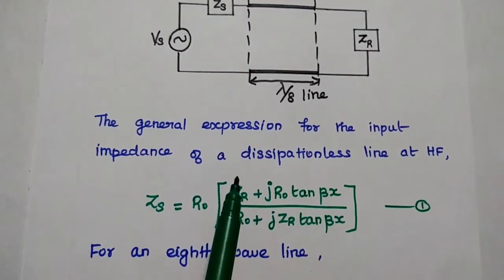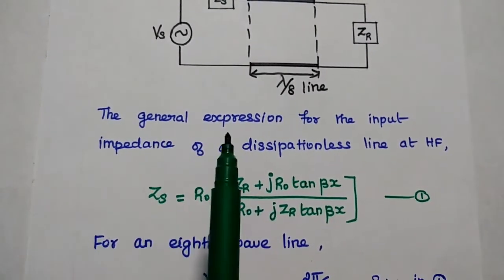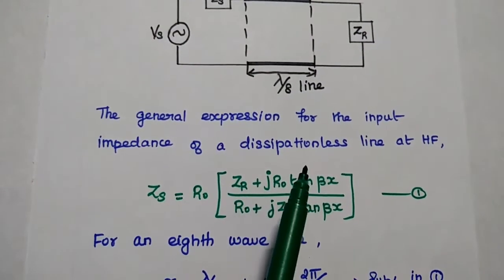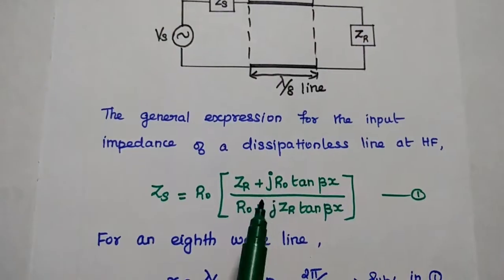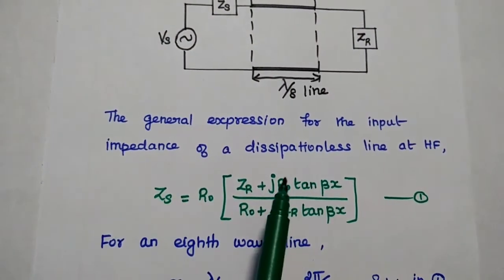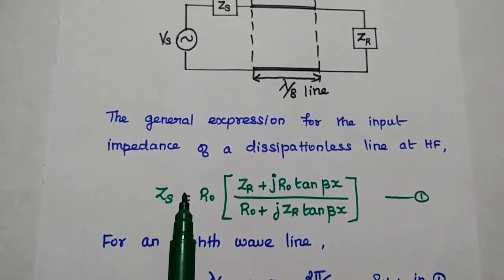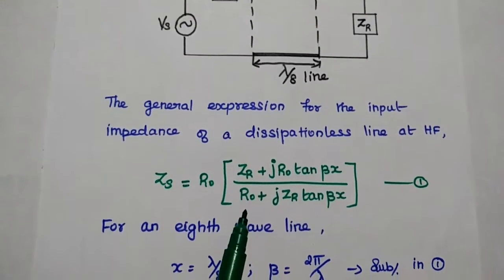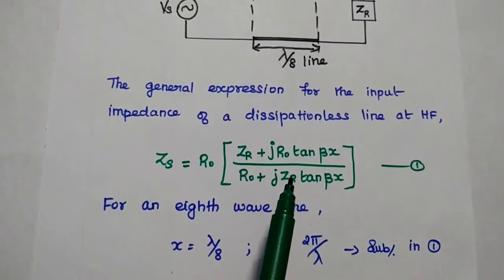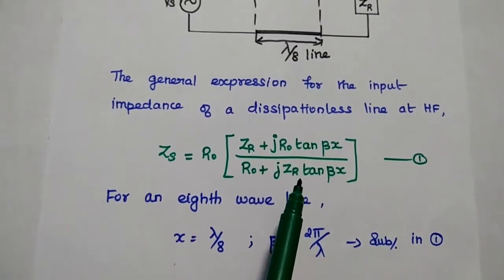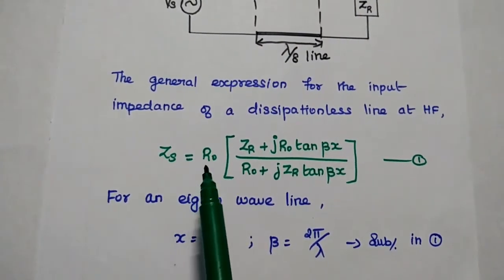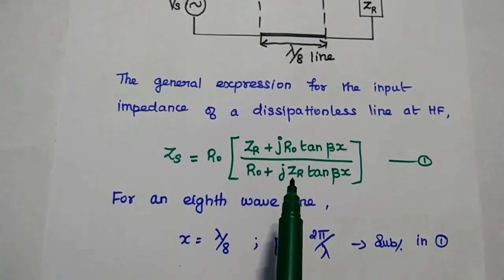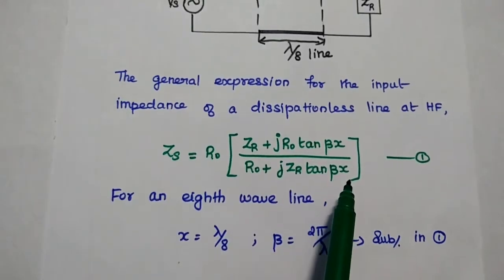We can analyze the process using the general expression for the input impedance of a dissipationless line at high frequency, which was derived in the previous lecture. The input impedance of a transmission line at high frequency is: ZS = R0 × (ZR + jR0 tan βx) / (R0 + jZR tan βx). For the eighth wave line, x = λ/8 and β = 2π/λ. Substituting these values gives ZS = R0 × (ZR + jR0 tan(2π/λ × λ/8)) / (R0 + jZR tan(2π/λ × λ/8)).